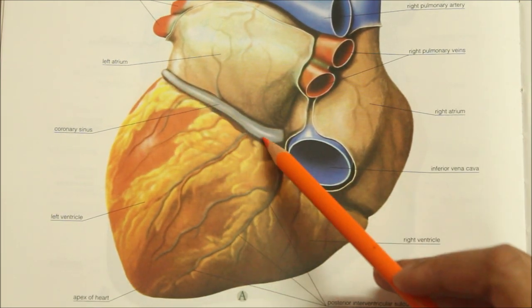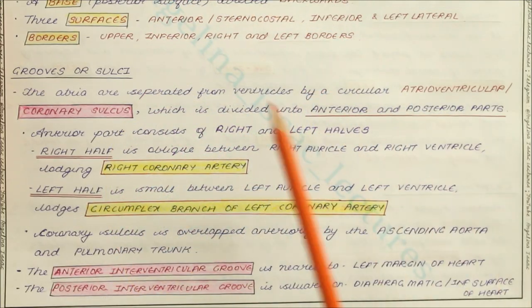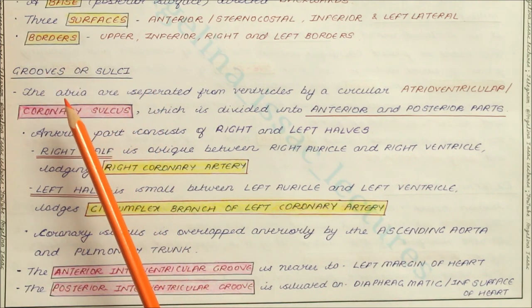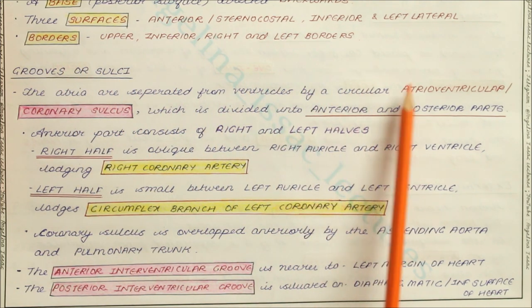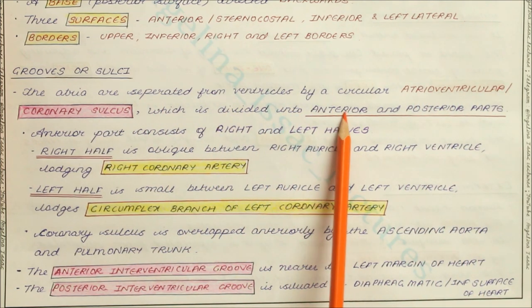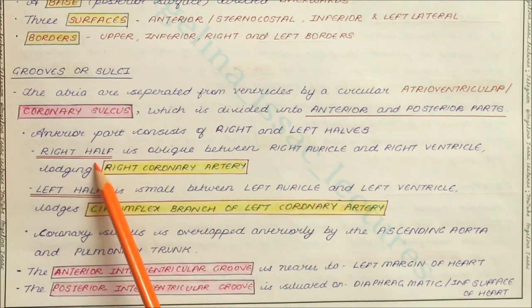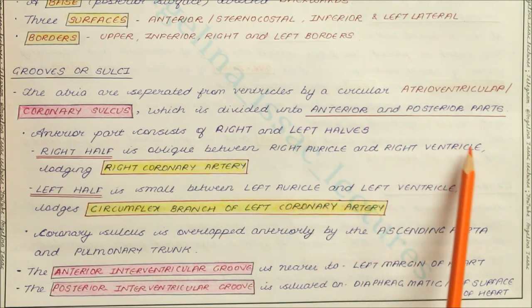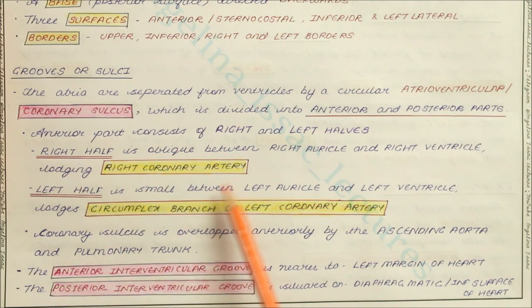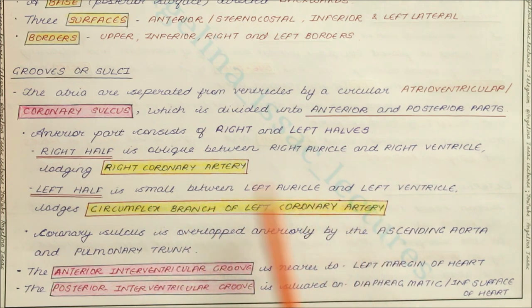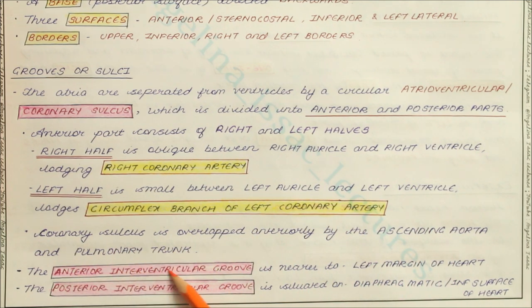Here is the posterior part of the coronary sulcus. In summary: the atria are separated from the ventricles by a circular atrioventricular or coronary sulcus divided into anterior and posterior parts. The right half lodges the right coronary artery; the left half lodges the circumflex branch of the left coronary artery. The coronary sulcus is overlapped anteriorly by the ascending aorta and pulmonary trunk. The anterior interventricular groove is nearer to the left margin of the heart, whereas the posterior interventricular groove is on the diaphragmatic surface.